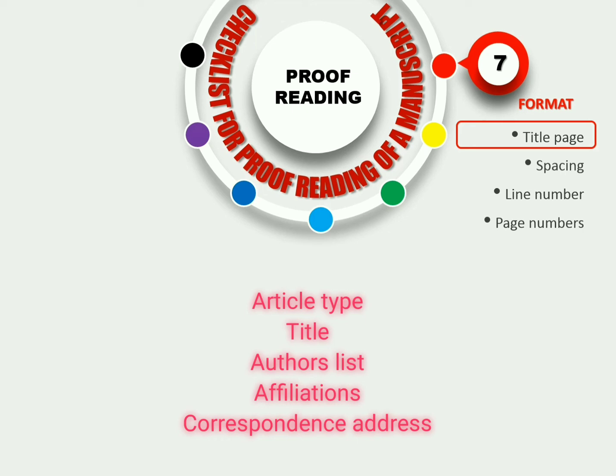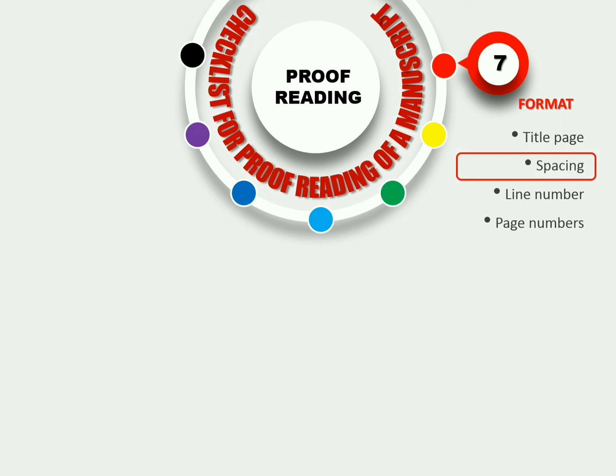Once you have done with the whole proofreading process, further spacing is checked for better readability. Line spacing, space before paragraph, space after paragraph, space between title and paragraph are some of the points that can be checked for better appearance.